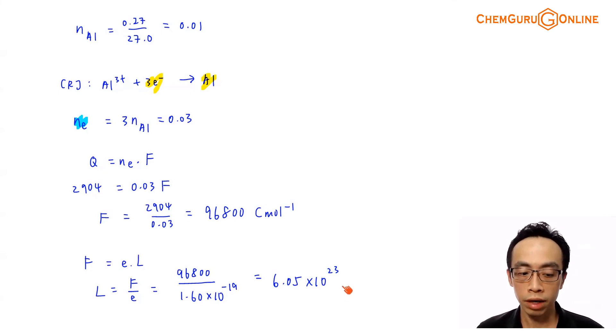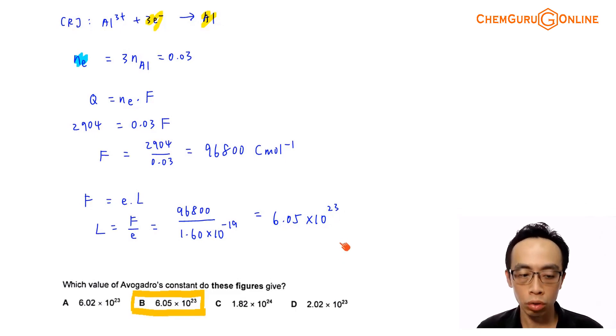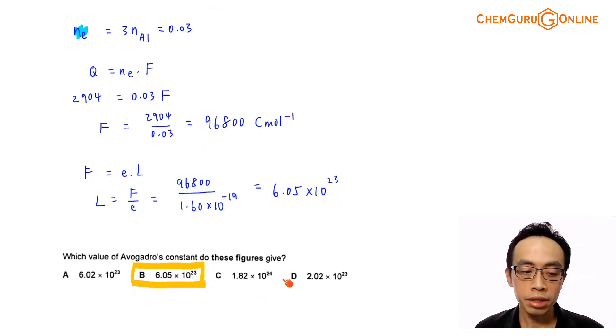Actual value of Avogadro constant is supposed to be 6.02 times 10 to the power of 23. So this value that we are getting is actually pretty close. If I run through the options ABCD, the answer to this question, of course, will be option B.